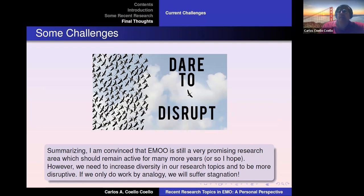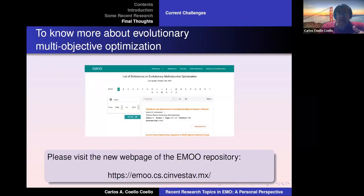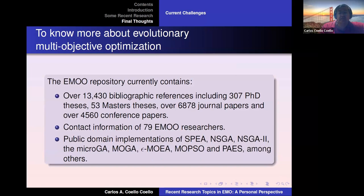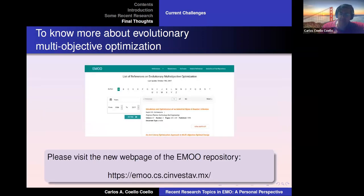Summarizing: EMO is still a very promising research area that should remain active for many more years, but we need to increase diversity in the topics we explore and be more creative. If you are interested in knowing more about EMO, you are welcome to visit the EMO repository — a website containing a large number of references including more than 300 PhD theses, public-domain software links, and full platforms like PlatEMO with more than 100 multi-objective evolutionary algorithms in MATLAB.